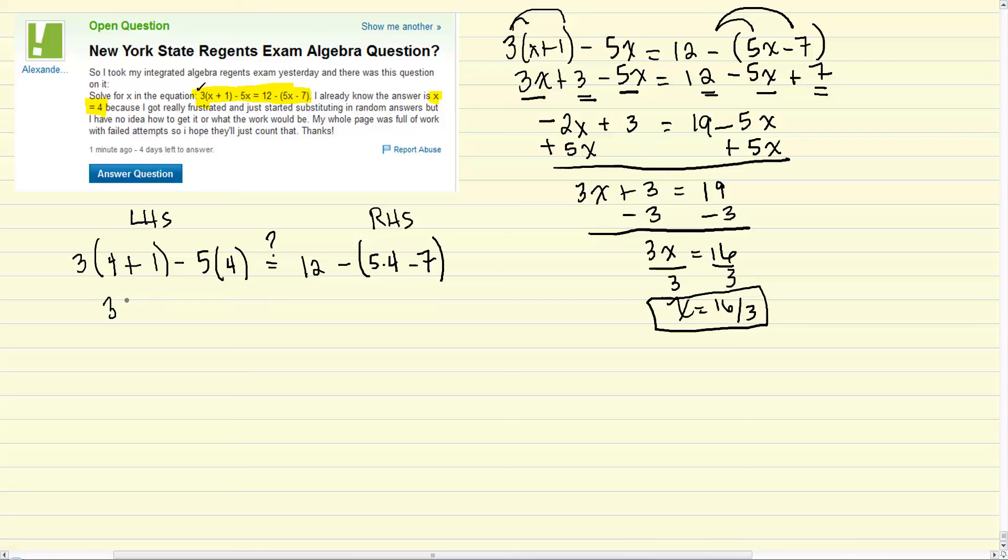So let's just simplify. 3 times 5 minus 20. 15 minus 20. 15 minus 20 is negative 5. So we need to see now the right hand side, what that equals. And if it's negative 5, then x equals 4 is the correct answer or it's a solution. And if it's not, then we know x equals 4 is not a solution. So 12 minus 20 minus 7. 12 minus 13. And this is negative 1. So these guys are not equal. So x equals 4 is not a solution.